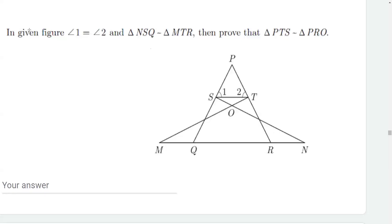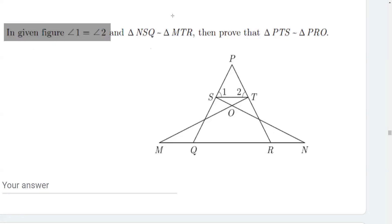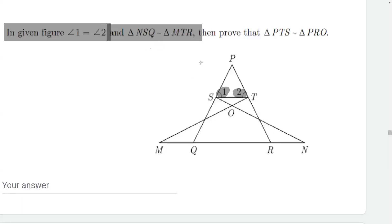We have one question from the chapter Similar Triangles. It says that in the given figure, angle 1 is equal to angle 2. We are given two triangles similar, that is triangle NSQ, so let me show you what the two triangles given similar are.